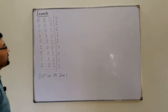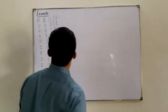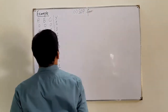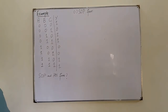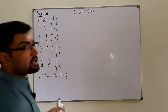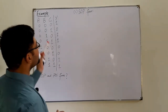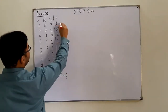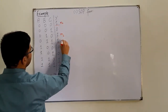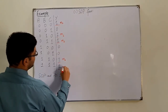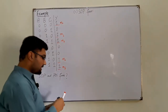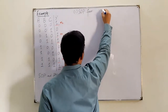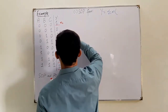Let's solve through the SOP form first. In the SOP form we take those terms where the function's value is 1. It's 1 here, 1 here, here, here, and here. So these are the minterms M0, M2, M3, M4, M5, M6, and M7. This function Y can be written as a summation of the minterms 0, 2, 3, 6, and 7.